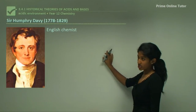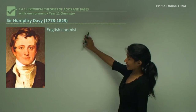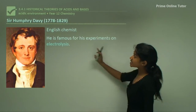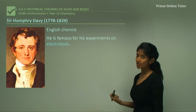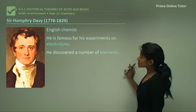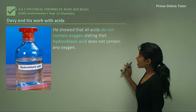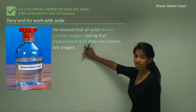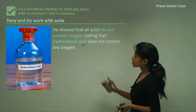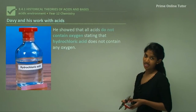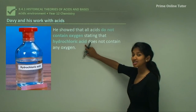Humphrey Davy came after Lavoisier and refined his definition of acid. Davy was an English scientist famous for his experiments on electrolysis — converting electrical energy to chemical energy — and he discovered a number of elements using electrolysis. He showed that all acids do not contain oxygen, stating that hydrochloric acid (HCl) does not contain any oxygen, which defied Lavoisier's definition.